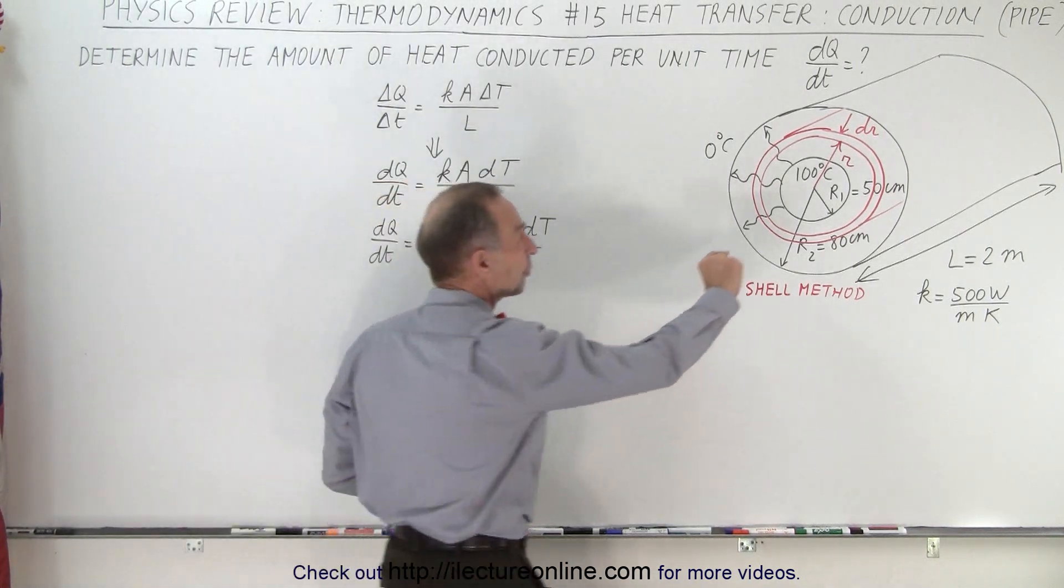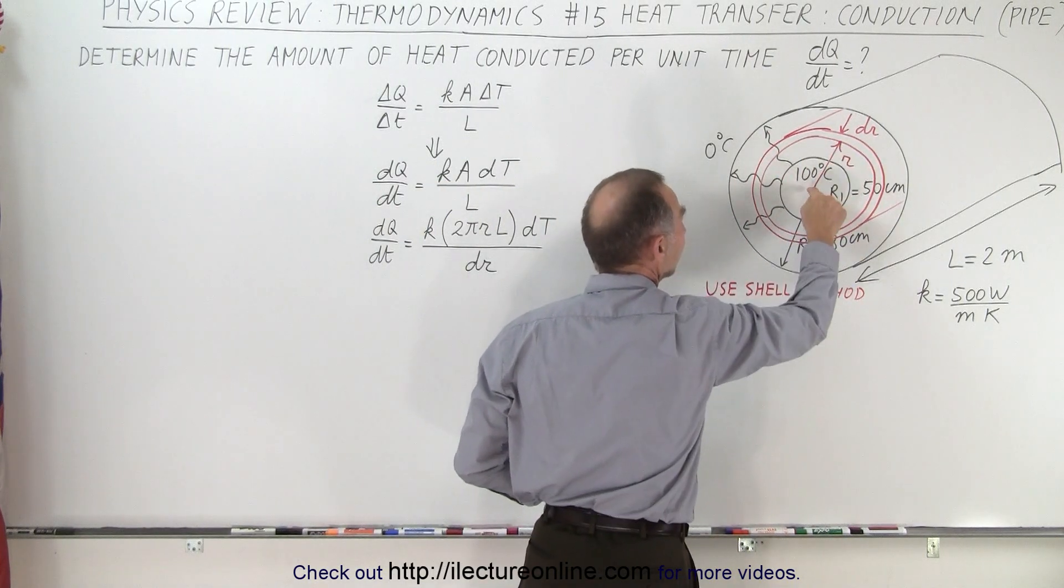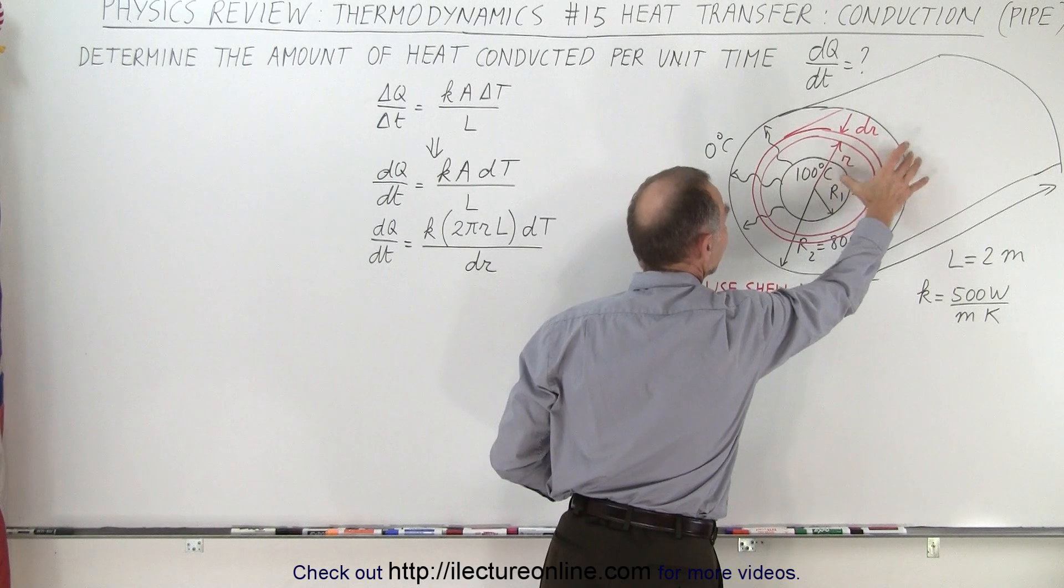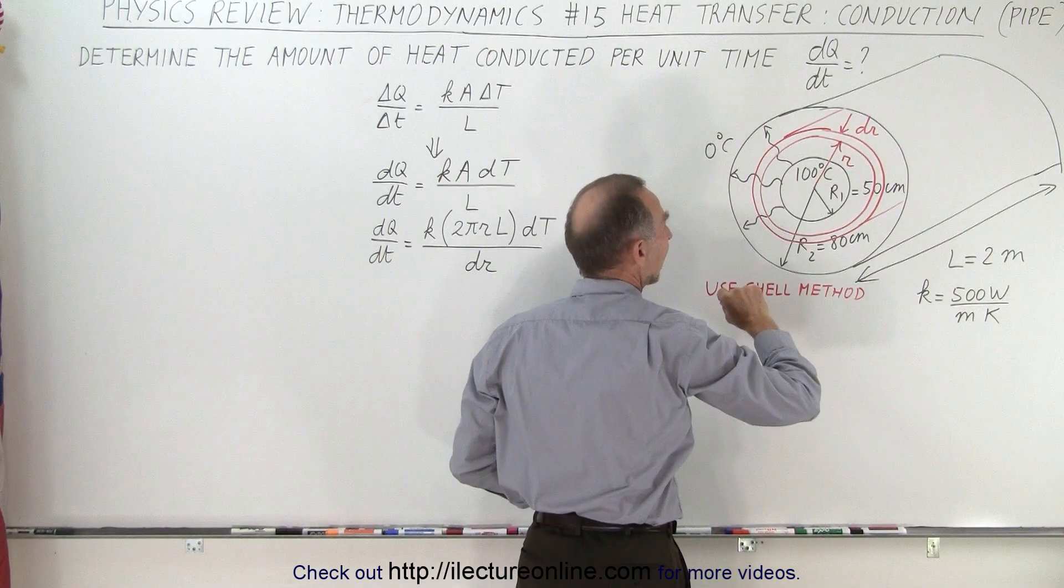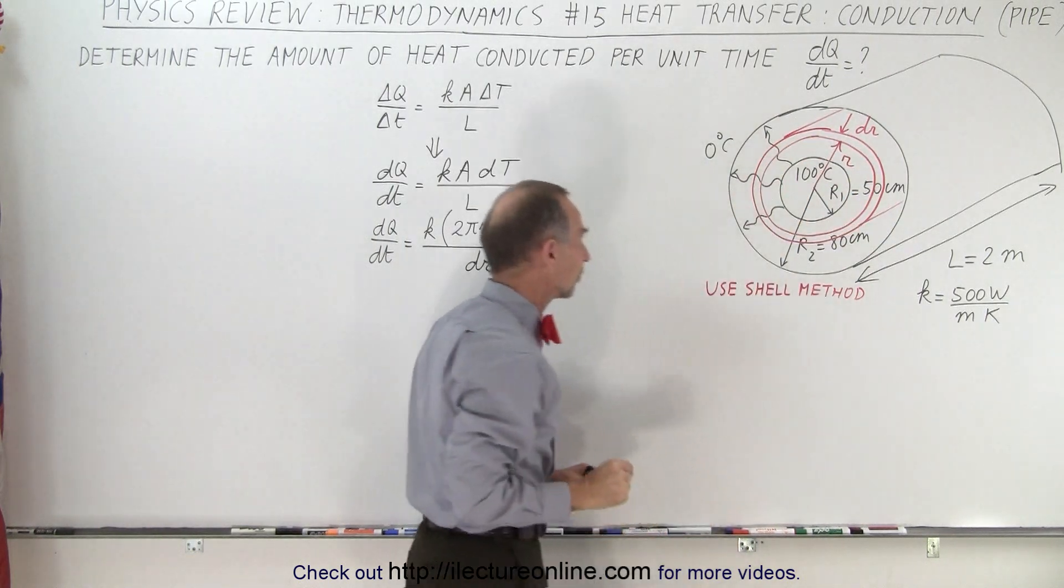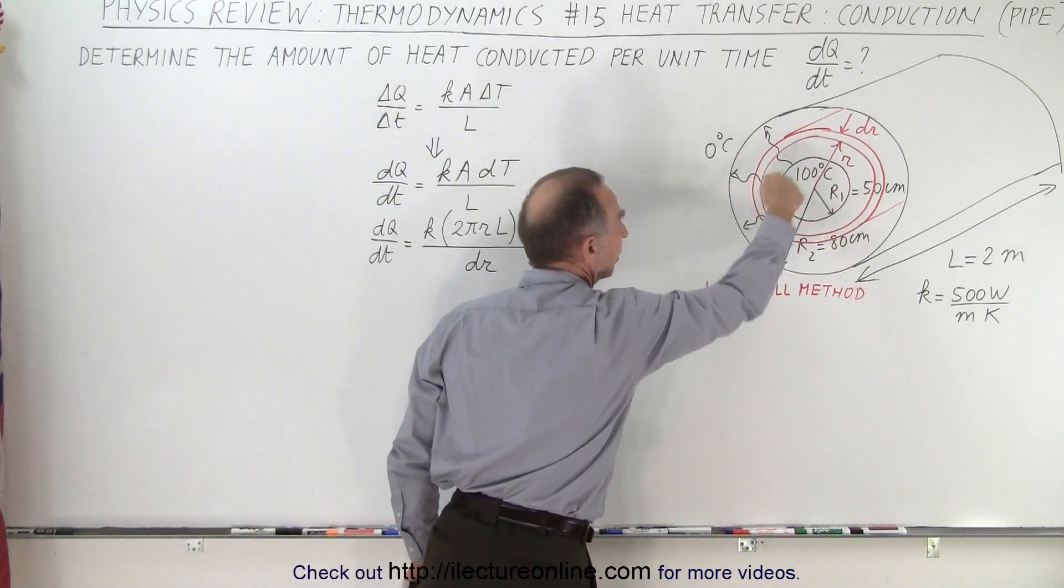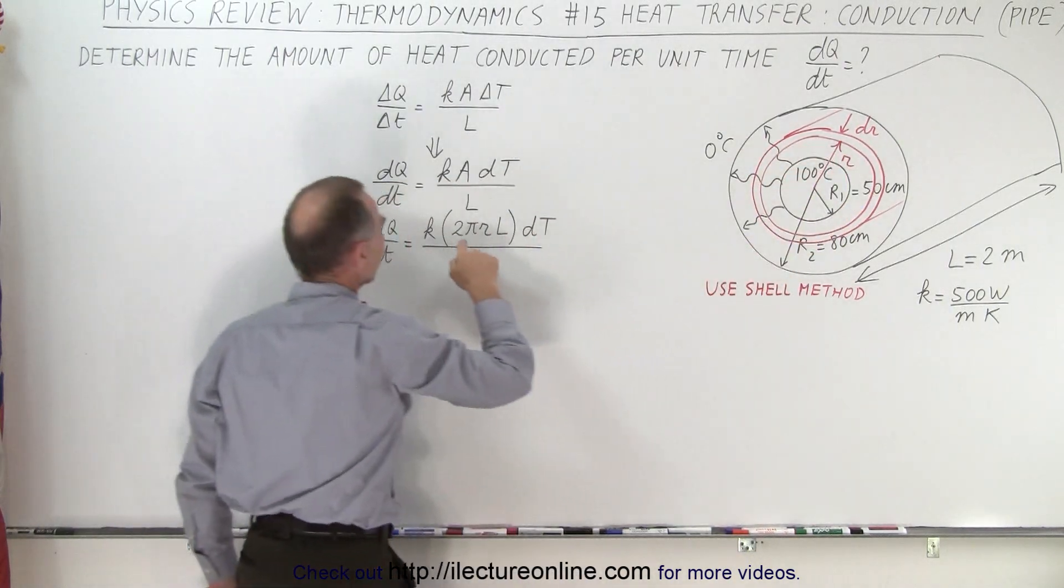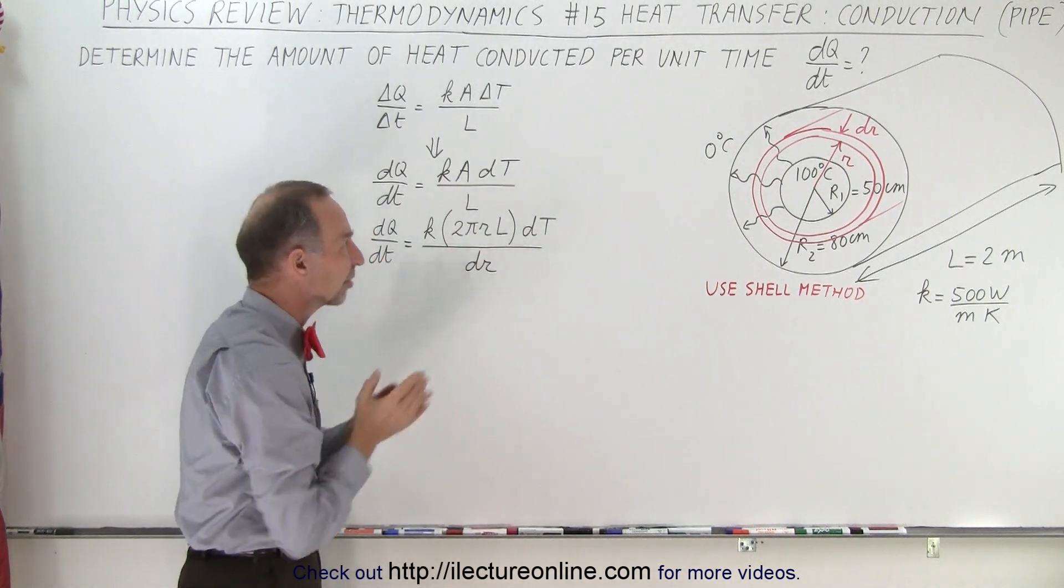What we're going to do is create a little shell at distance r from the center, between the inner and outer radius. The thickness of that shell will be a small dr. Now we need to find the cross-sectional area for the heat traveling through this section. The area is the circumference, which is 2πr, times the length of the pipe. So that's 2πr times L—that's the surface area of that shell inside.